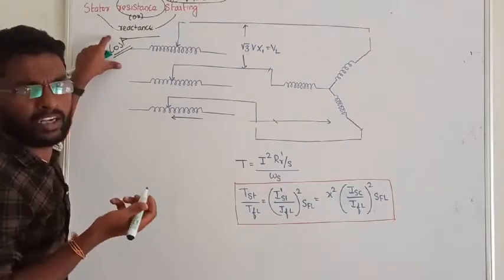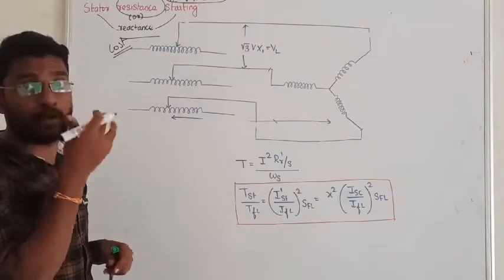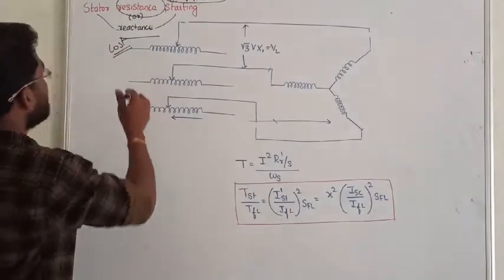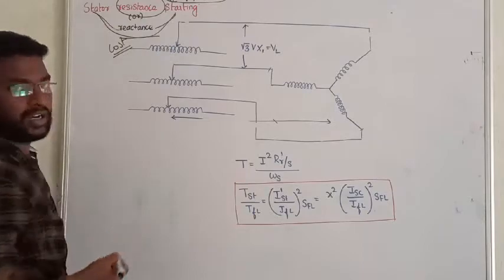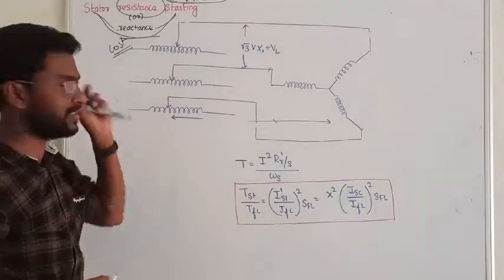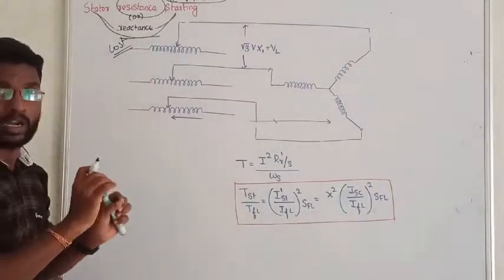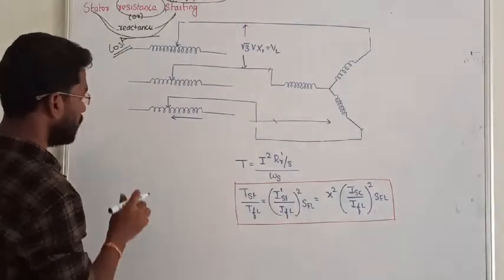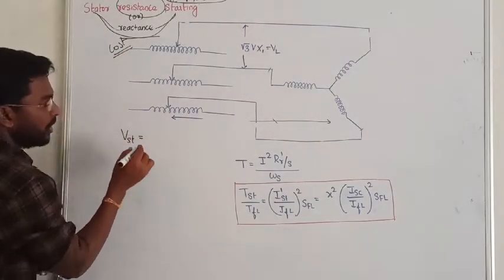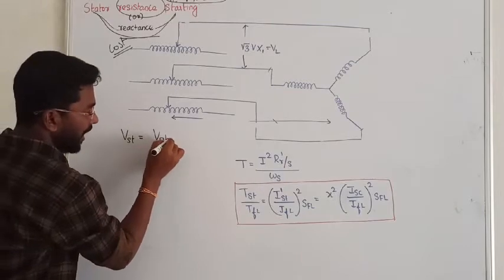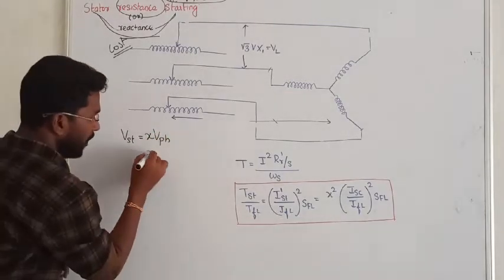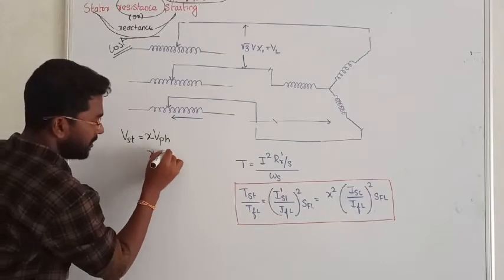Now, I am going to discuss the Stator Reactance starting method. The logic is very simple: at starting, we apply a reduced voltage, which is X times the rated voltage, where X is less than 1.